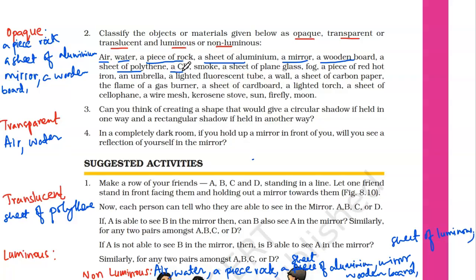A CD — how will you categorize it? Transparent, translucent, or opaque? Opaque, right? So a CD is opaque. Smoke — how will you categorize smoke? Smoke is translucent, not transparent.